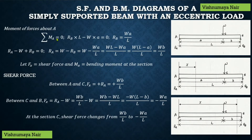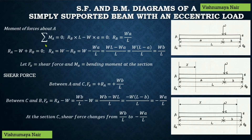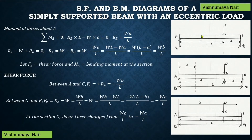Summation MA will be equal to zero, because the bending moments at the two supports of a simply supported beam are equal to zero. Summation MB will also be equal to zero. For now, let's consider summation MA equal to zero. This implies that the resultant of the moments due to all forces acting on the beam will be equal to zero.